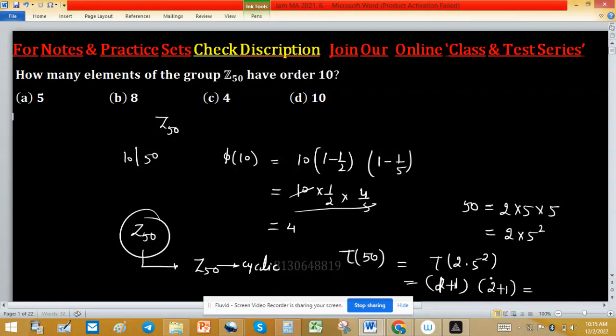Sorry, 1 plus 1 because first power is 1 plus 1 and second power is 2. So 2 plus 1, so 2 into 3 means there will be 6 subgroup of Z 50 and obviously 2 are very obvious. So 1 is 5 and second is Z 50 itself.